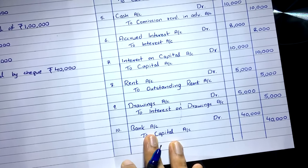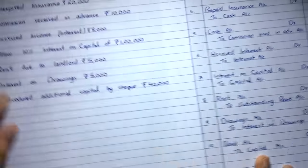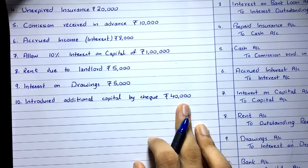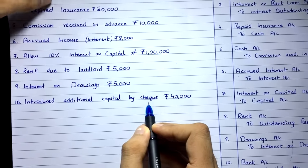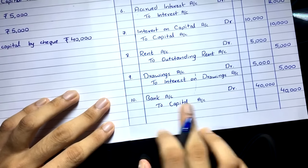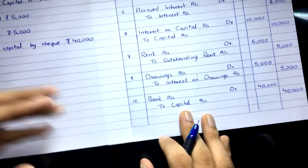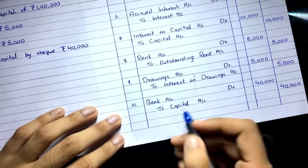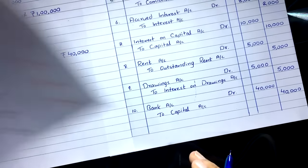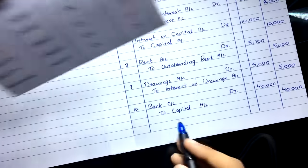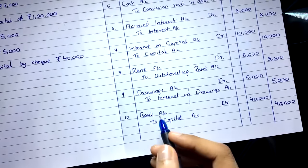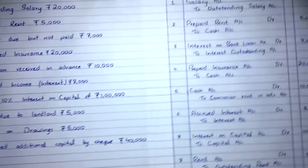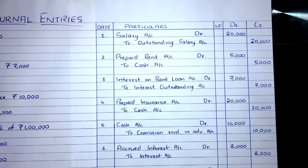Transaction ten: introduce additional capital by cheque, 40,000. This is a simple entry. The owner has brought in additional capital by cheque, so bank account is debited and capital account is credited. Entry: bank account debit 40,000, to capital account credit 40,000. Capital account is increasing — credit that.